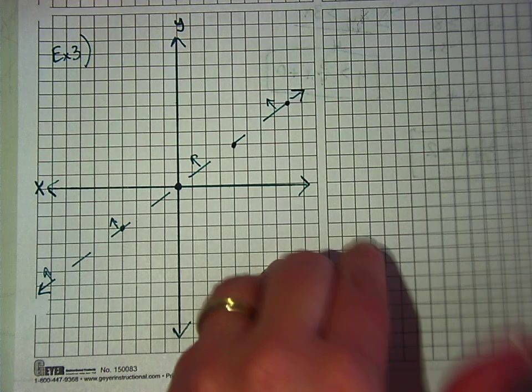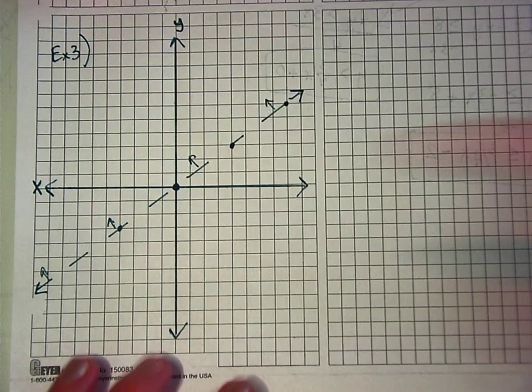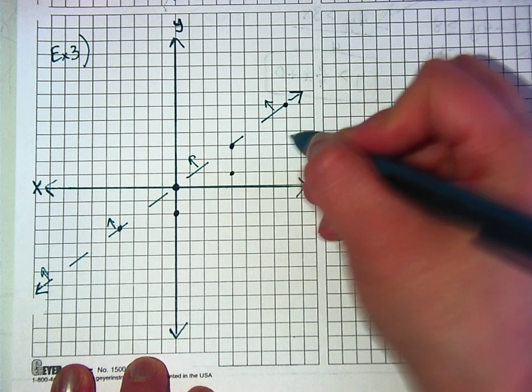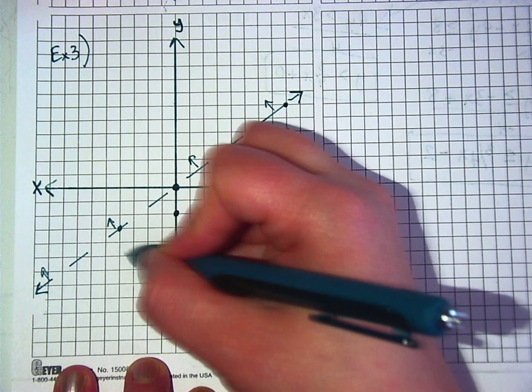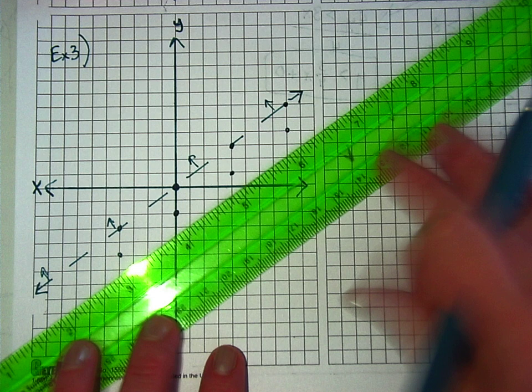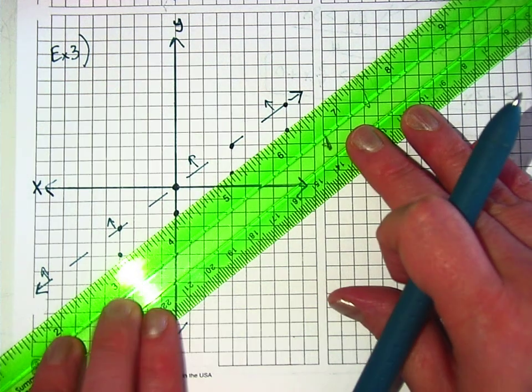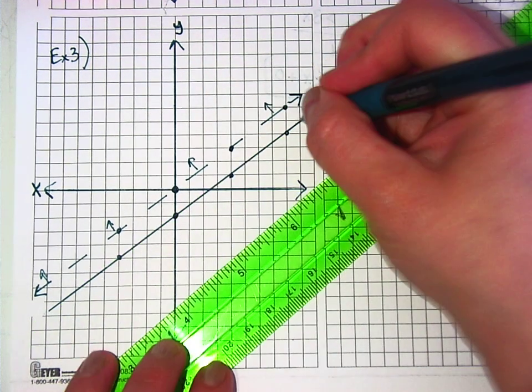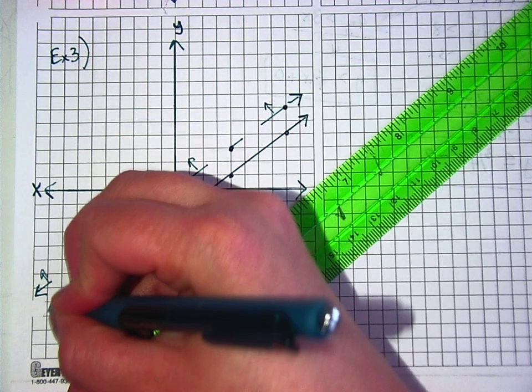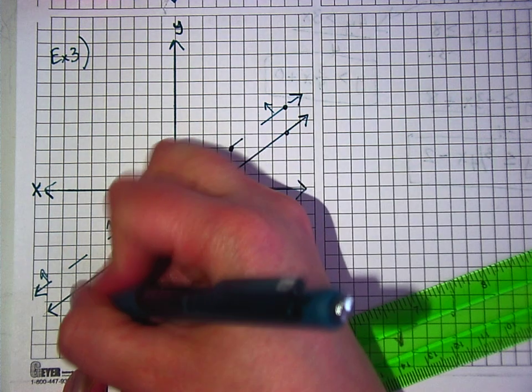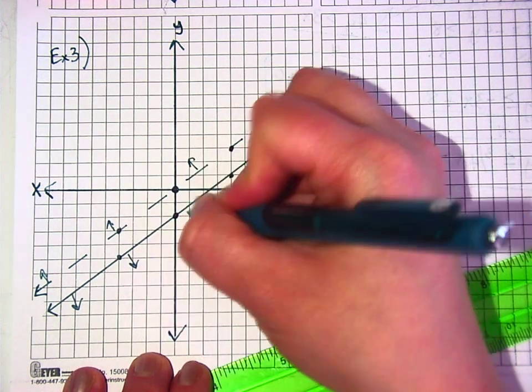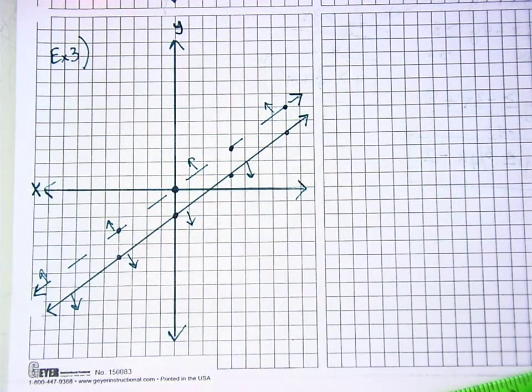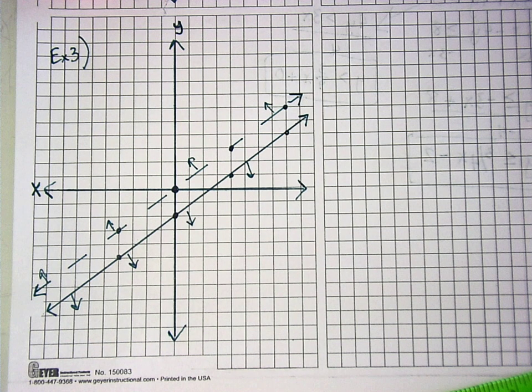And the other one had a y-intercept of negative 2, but it also went up 3 over 4, right? Because it's the same slope. Was that one an equals too? So that one's got a solid line. And that one's less than, right? So that one's going this way. So where do they overlap? They don't. There's a no-solution problem where there are two things that will never overlap. Because they're going opposite ways.